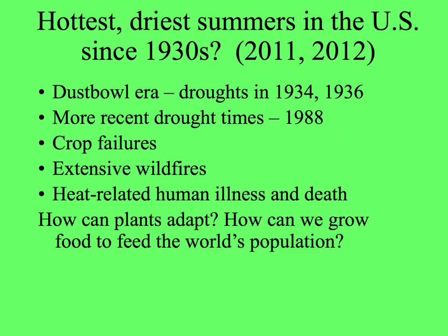There are lots of wildfires in very dry conditions and high temperatures that lead to their spreading. And of course, heat-related human illness and death, not to mention other animals. How can plants adapt to such extremes? And how can we grow food to feed the world's population in the face of things like this? These are some of the questions plant ecologists can hope to answer.